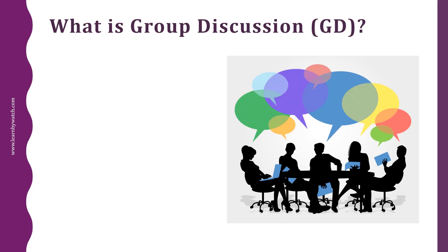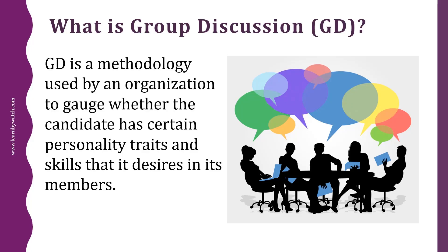Group discussion — in short, GD — forms an important part of the shortlisting process for recruitment in a company or admission in an institution. Group discussion is a methodology used by an organization to gauge whether the candidate has certain personality traits and skills that it desires in its members.